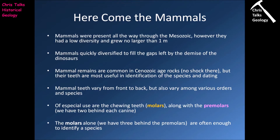Mammal remains are relatively common in Cenozoic age rocks — no shock there because of what's called the pull of the recent. When it comes down to it, we find their teeth are most useful for the identification of species and dating, because mammal teeth are on the whole quite robust. Even if you have something with a quite fragile skeleton like a mouse, the skeleton itself often won't survive. However the teeth, being much more robust, will often persist and become incorporated into sedimentary rocks. Mammalian teeth in particular are exceptionally helpful for dating during the Cenozoic.